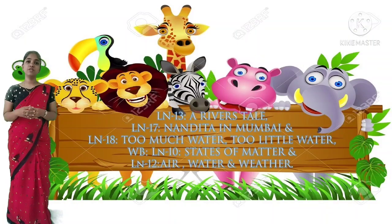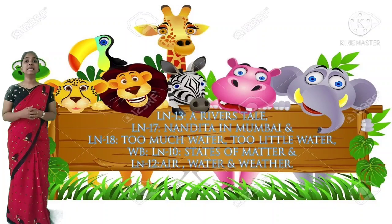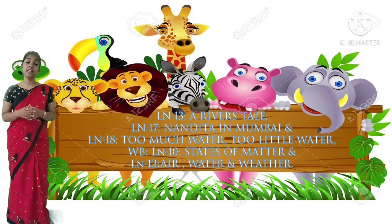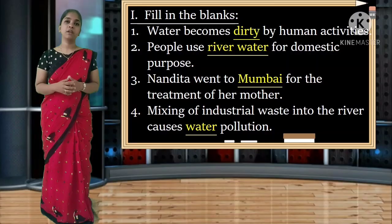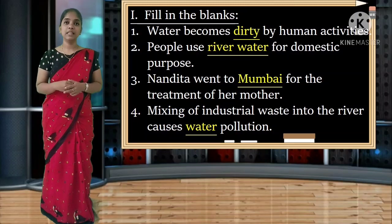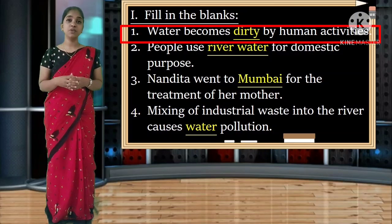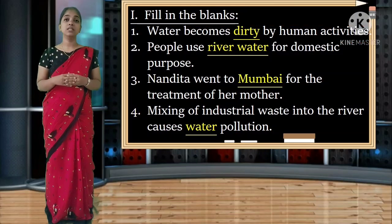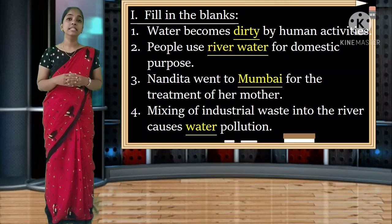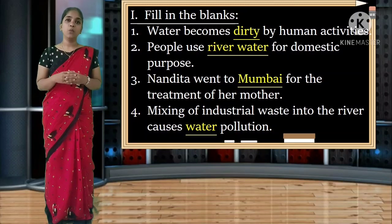Next portion: lesson 13 - Reverse Day, lesson 17 - Nandita in Mumbai, lesson 18 - Too Much Water Too Little Water. Fill in the blanks. First: water becomes dirty by human activity. The answer is dirty. Spelling: D-I-R-T-Y. Second: people use river water for domestic purpose. The answer is river water. Spelling: R-I-V-E-R W-A-T-E-R.